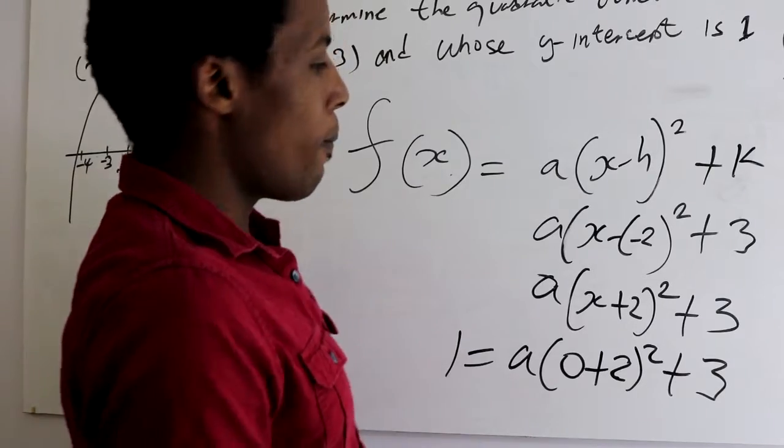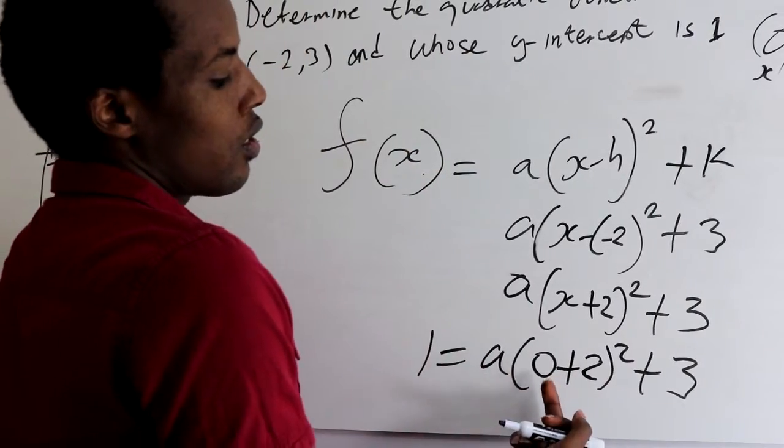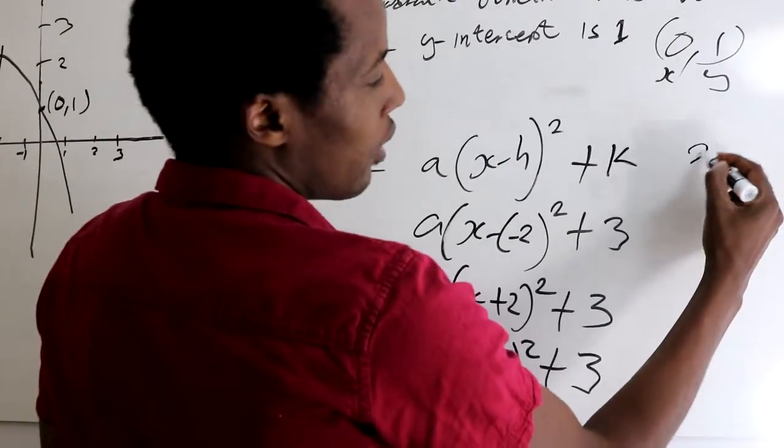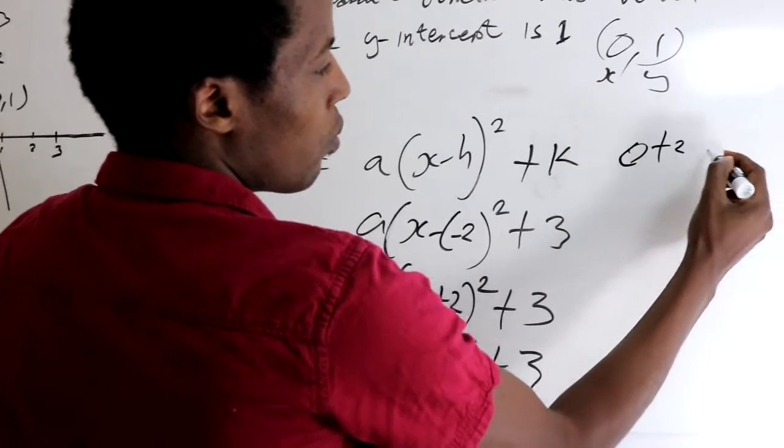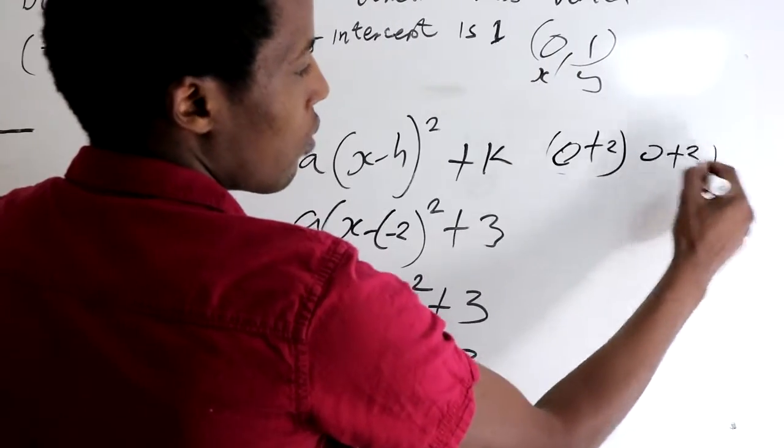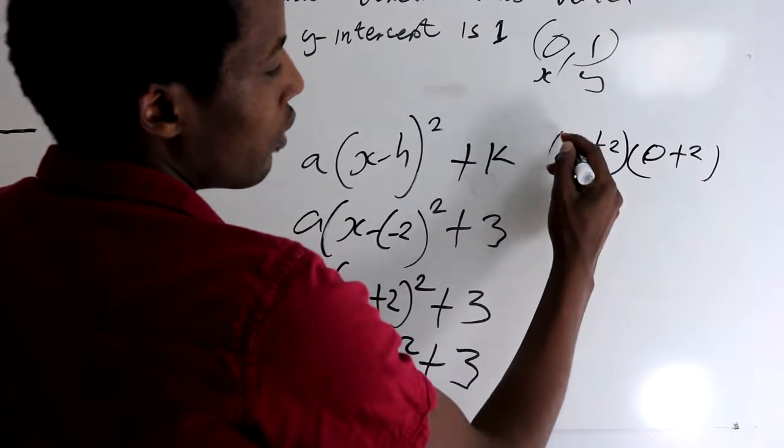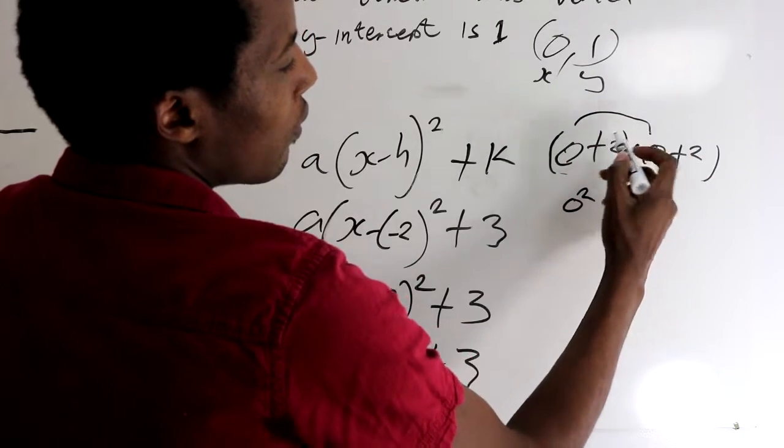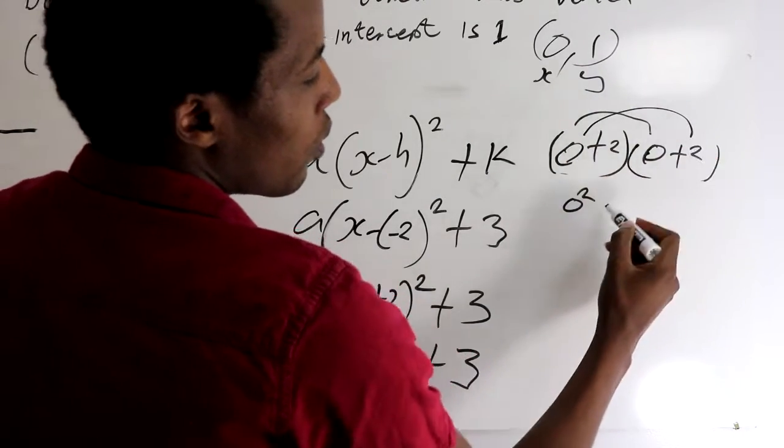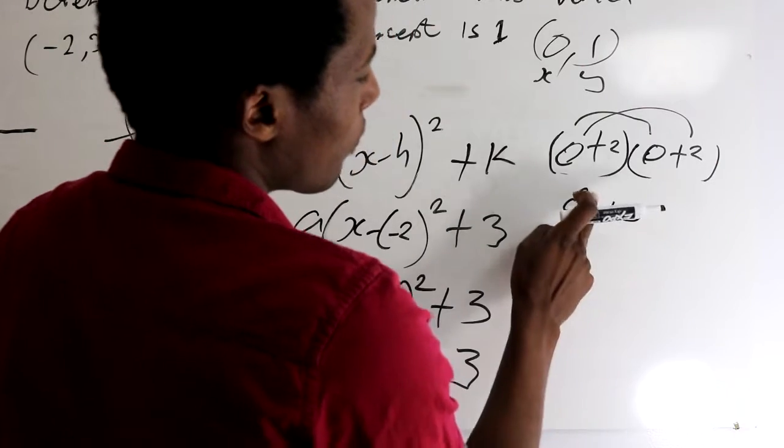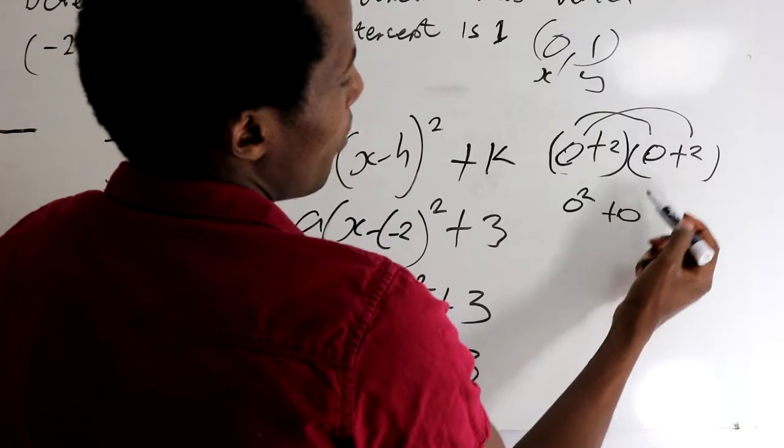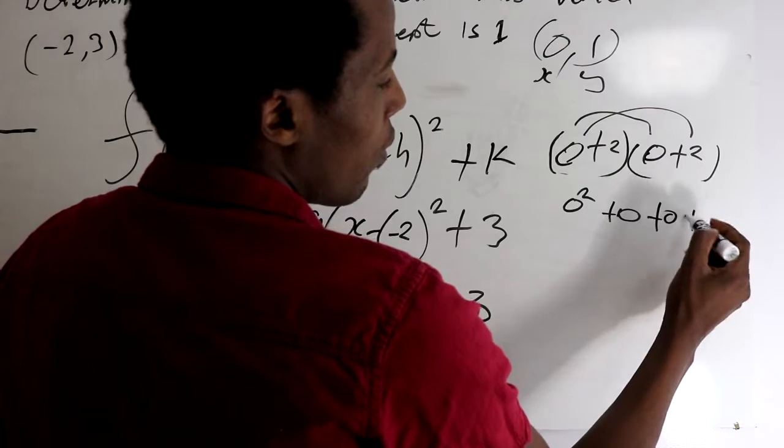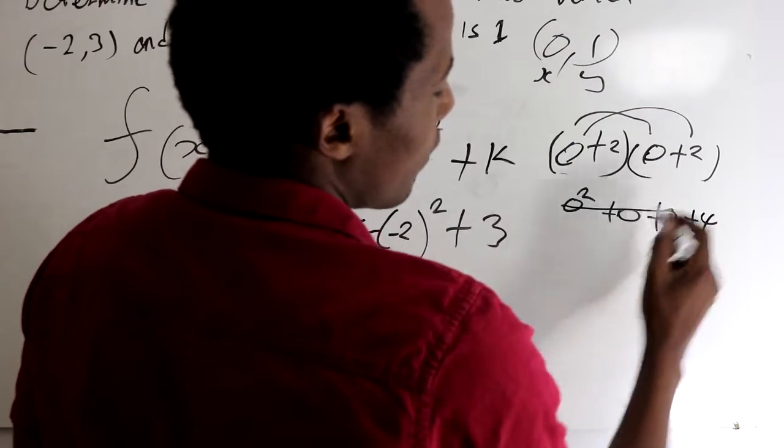So the value of A is, if you expand 0 plus 2 squared, I'm not sure you guys know how to expand that. It's equal 0 plus 2, 0 plus 2. If you foil the equation, it's going to be 0 squared plus 0 times 2, and then 2 times 0, and then 2 times 2 is 4. So basically it's 4.